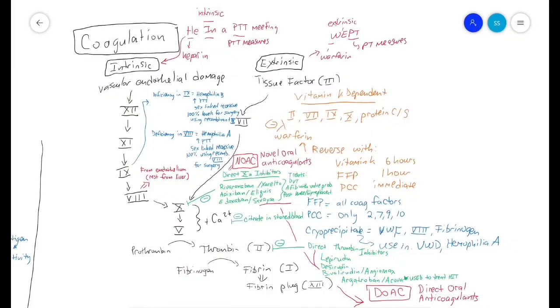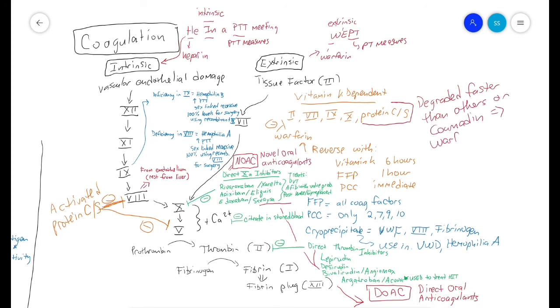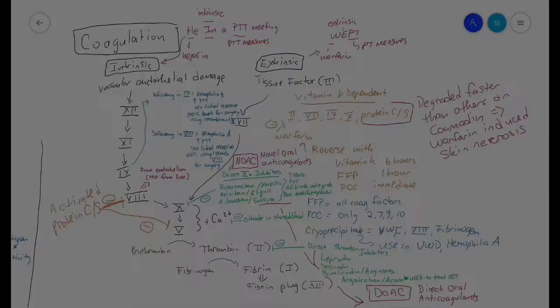Activated protein C and S are actually anti-thrombotic and inhibit factors 8 and 5 in the coagulation cascade. When you give someone Coumadin, you actually degrade protein C and S faster, which can lead to warfarin-induced skin necrosis. This is even more prominent in people with inherited protein C or S deficiency.